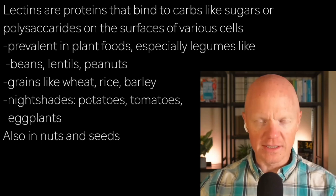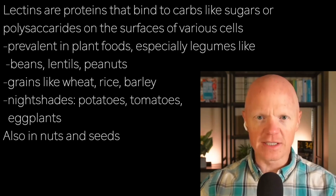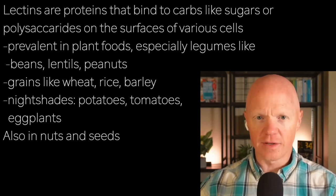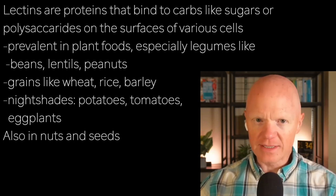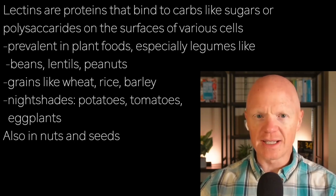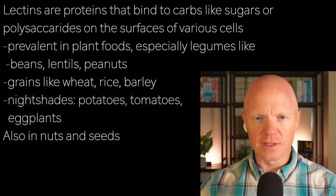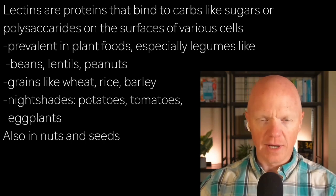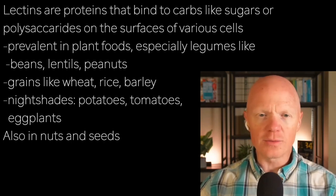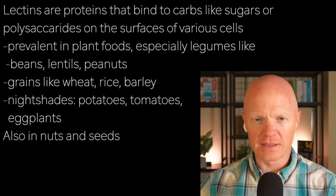Lectins are proteins that bind specifically to carbohydrates, such as sugars or polysaccharides, on the surfaces of various cells. They're prevalent in plant foods — most especially legumes like beans, lentils, or peanuts; grains like wheat, rice, and barley; and also nightshades, which are tomatoes, potatoes, eggplants, and similar.